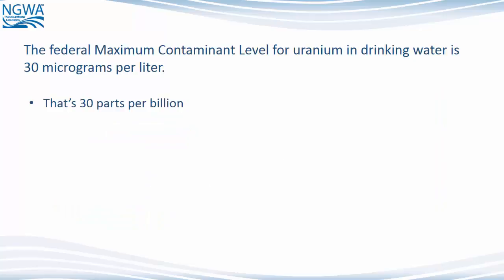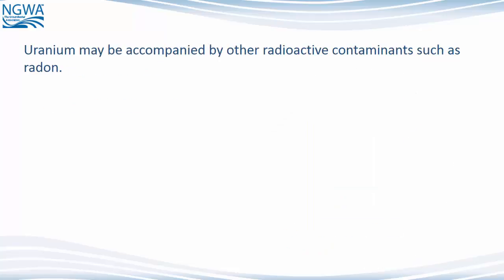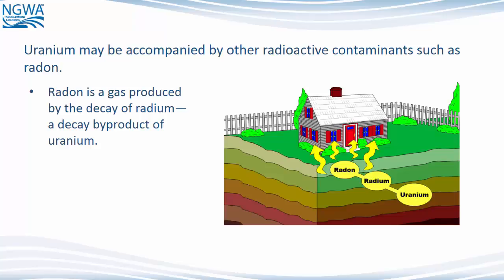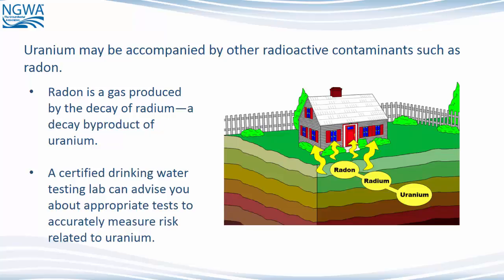The federal maximum contaminant level for uranium in drinking water is 30 micrograms per liter — that's 30 parts per billion. Uranium may be accompanied by other radioactive contaminants such as radon. Radon is a gas produced by the decay of radium, a decay byproduct of uranium. A certified drinking water testing lab can advise you about appropriate tests to accurately measure risk related to uranium.